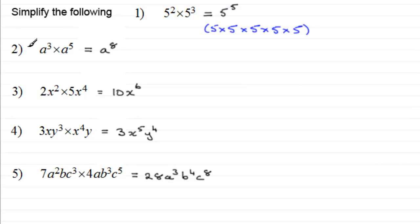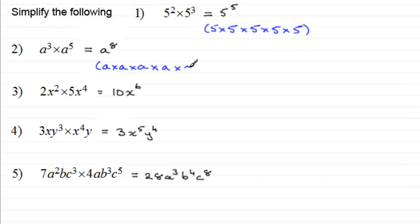For number two, a cubed times a to the power five: a cubed is a multiplied by a multiplied by a — so a repeatedly multiplied by itself three times over. Then we multiply this by a to the power five, which is a repeatedly multiplied by itself five times over. So what we have is a repeatedly multiplied by itself eight times over — a to the power eight.